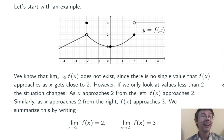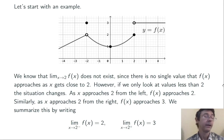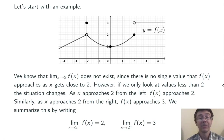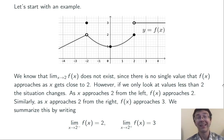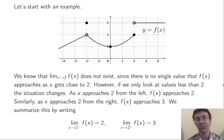So this is the idea of a one-sided limit. Here's the notation: we write the limit as x goes to 2 from the left of f of x equals 2, and the limit as x goes to 2 from the right of f of x equals 3. What I read as x going to 2 from the left and from the right is written with a sort of exponent of a minus or plus sign indicating the direction you're approaching from.